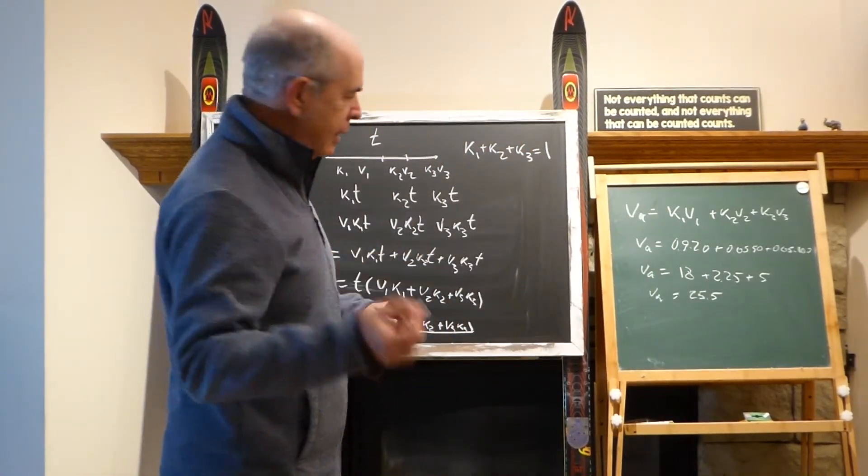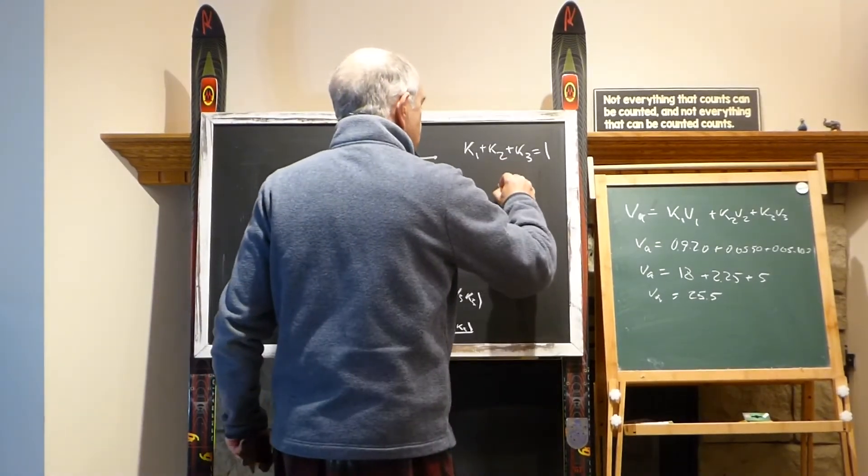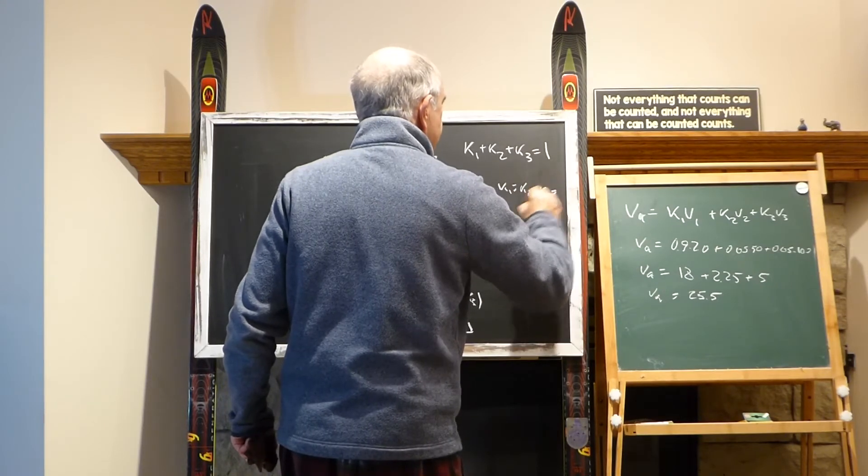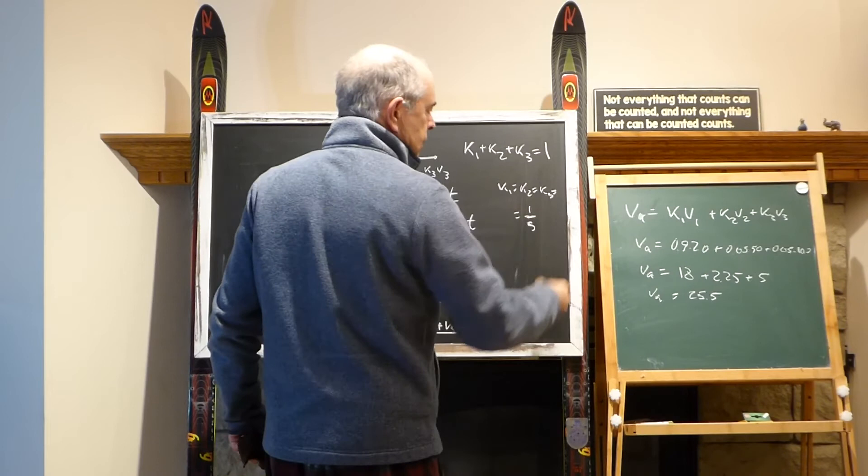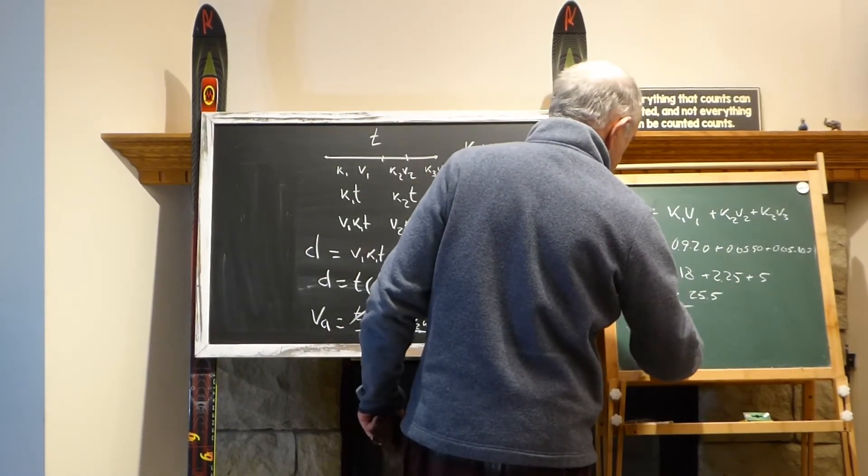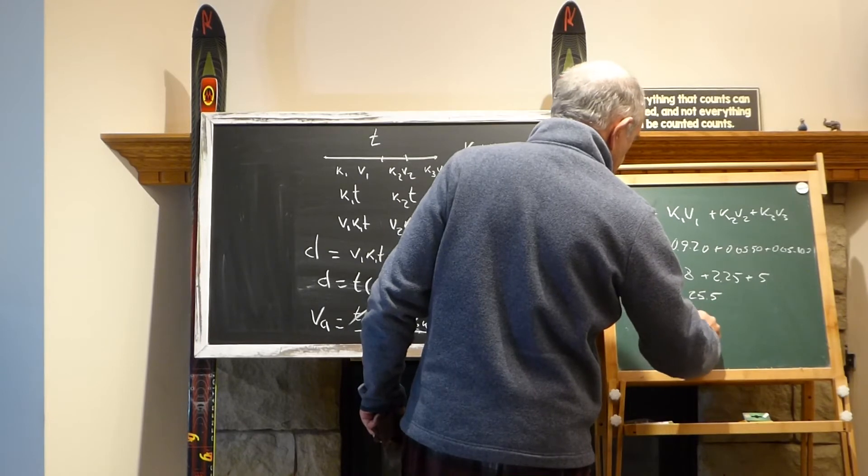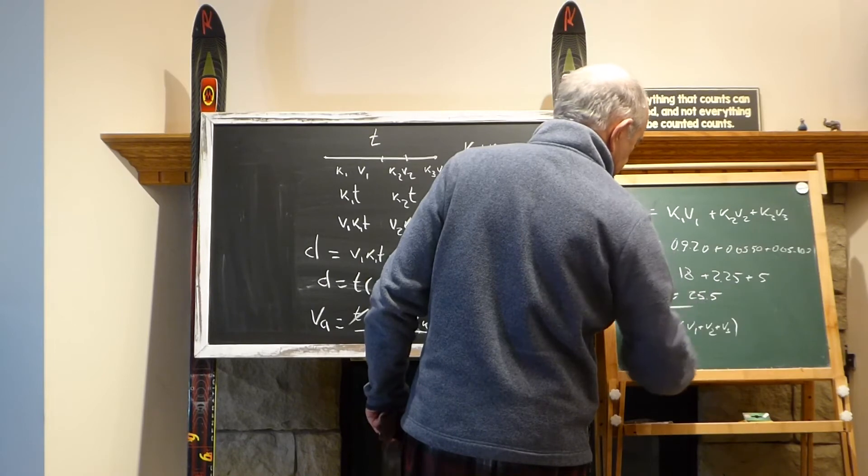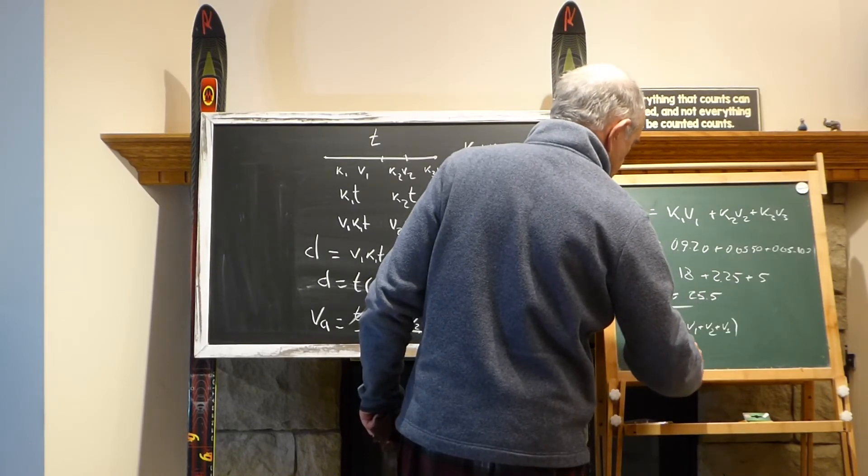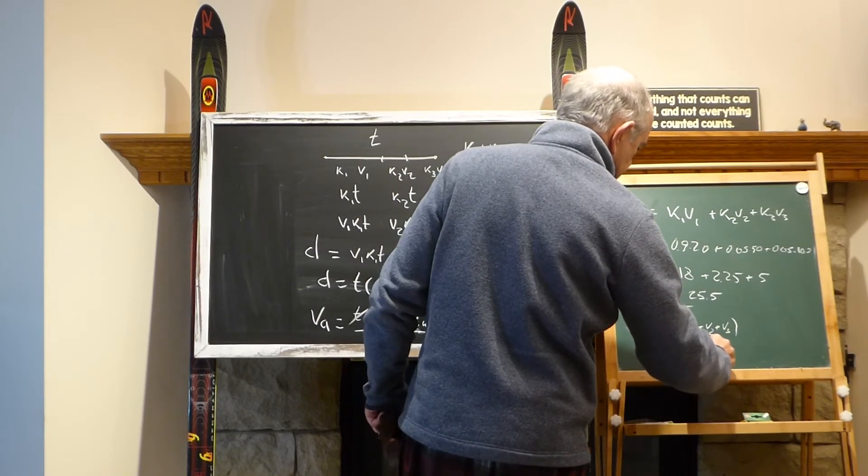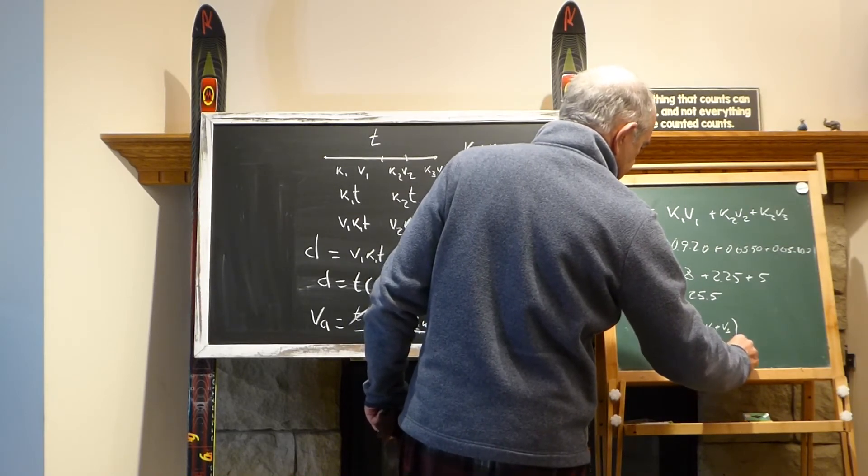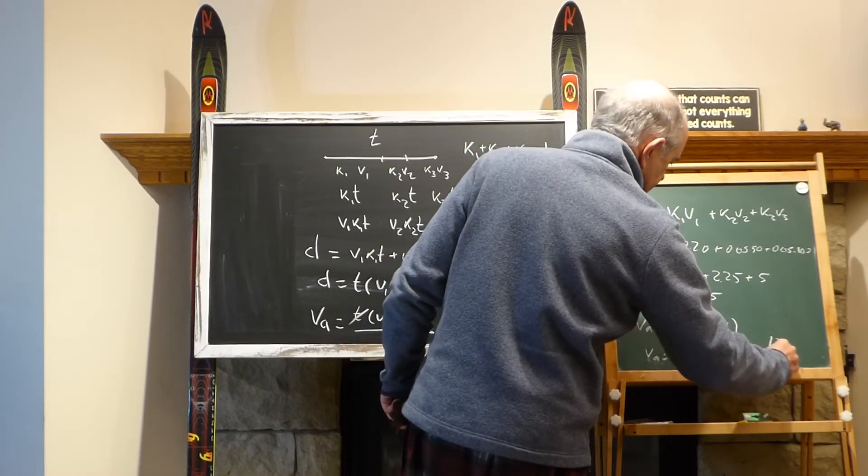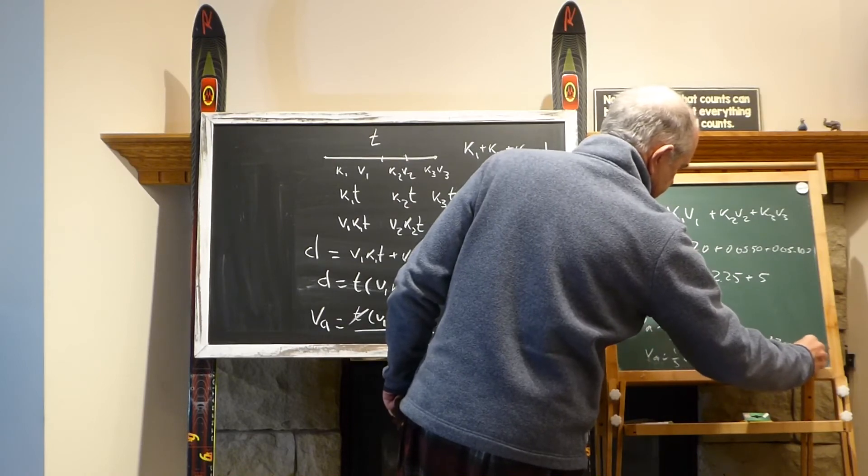Another case, what if k1 equals k2 equals k3, they're all the same, and they're all one-third. In this case, the formula becomes v_average equals one-third, and here would be v1 plus v2 plus v3. If we plug the numbers, average speed would be one-third of 20, 50, and 100. It would be 170 divided over 3, roughly 56 point something.